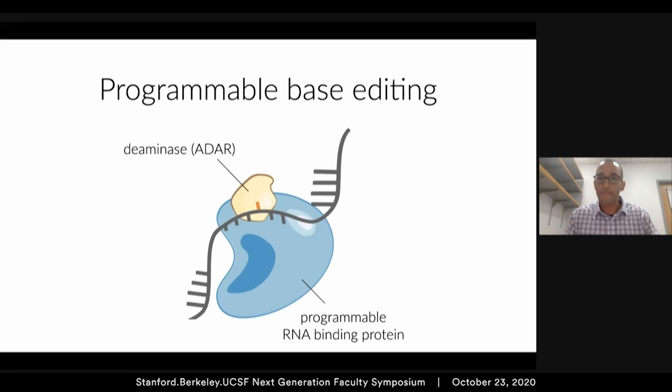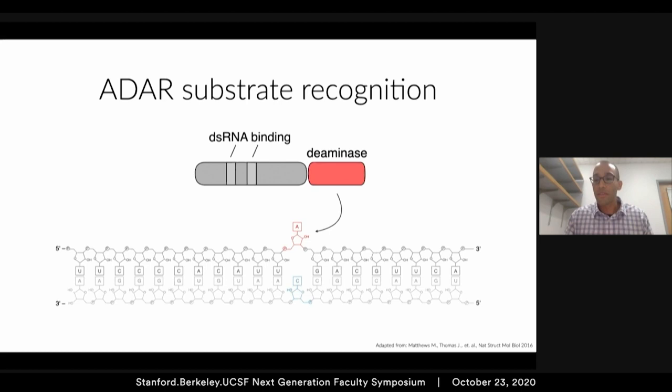So this is how ADAR works. It has an N-terminal double-stranded RNA binding domain and a C-terminal deaminase domain responsible for deaminating adenosines. It has a very cool mechanism by which it preferentially deaminates certain adenosines: if an adenosine is mispaired with a cytidine, that allows for much higher rates of adenosine deamination. We thought we could take advantage of this in our goal of building an RNA editing machine.